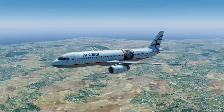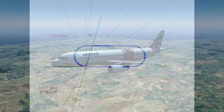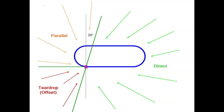Let's start by having a look at the three different holding pattern entries. Depending on our approach angle to the holding fix and the holding inbound course, a certain entry procedure has to be flown. There's the teardrop or offset entry, the parallel entry, and also the direct entry. In a few minutes we will see each of these entry procedures being flown by the A320.